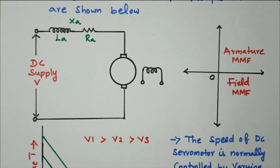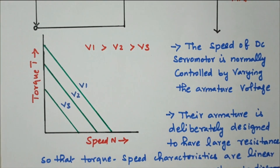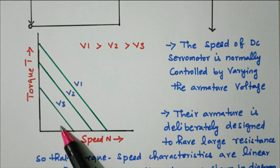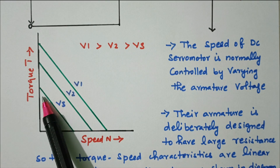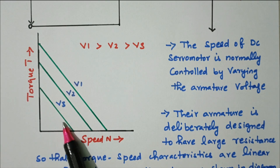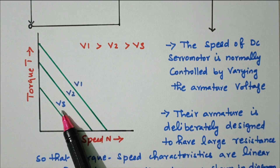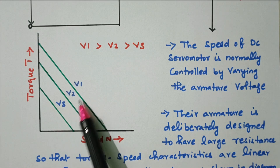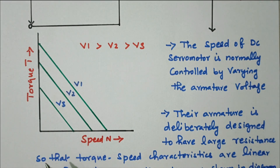Another important feature is the speed-torque characteristics. In the diagram, the x-axis is speed and the y-axis is torque — they are inversely proportional, giving a negative slope. The curves correspond to different voltages V1, V2, and V3, where V1 is greater than V2, then V3. When the voltage increases, the level also increases, but the slope remains negative. If speed increases, the torque will decrease — this is an important characteristic of a servo motor.